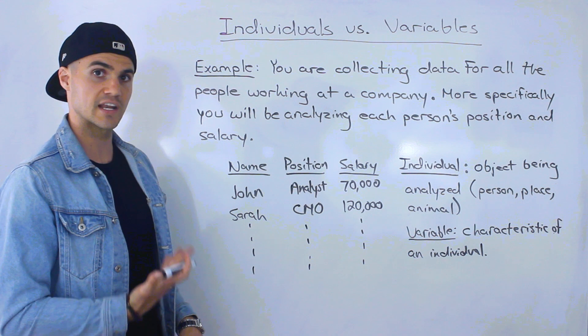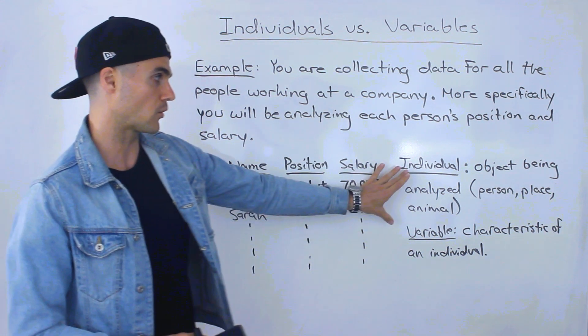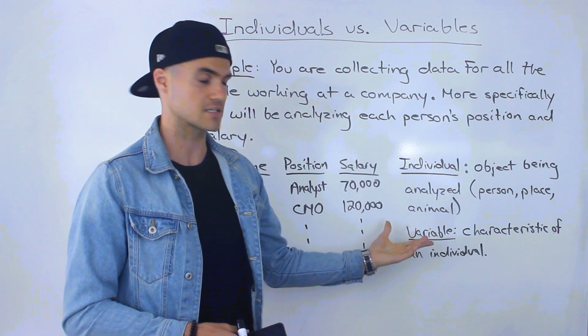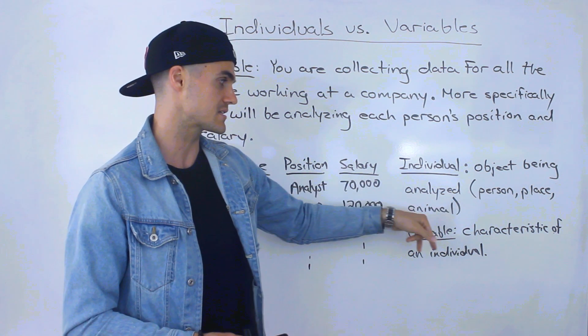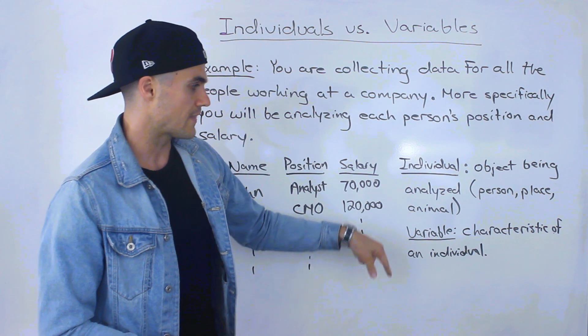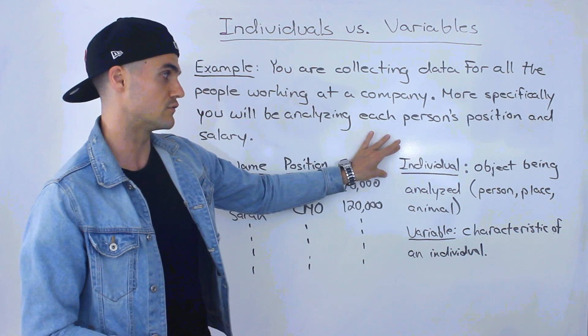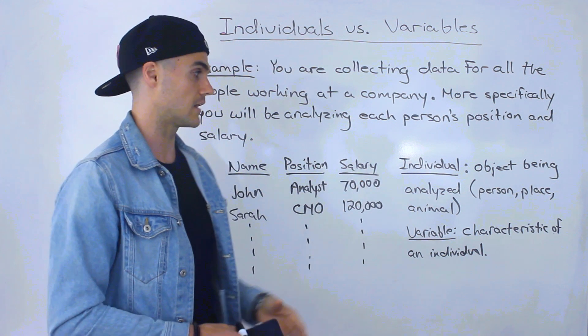Now the definitions of an individual and variable I wrote out over here. So an individual is the object that's being analyzed. Usually it's a person, place, sometimes it can be an animal as well. And then the variable is the characteristic of that individual, of that object that's being analyzed.